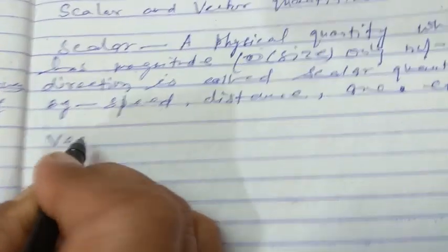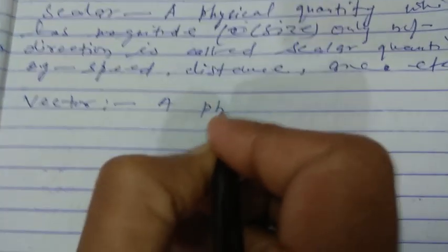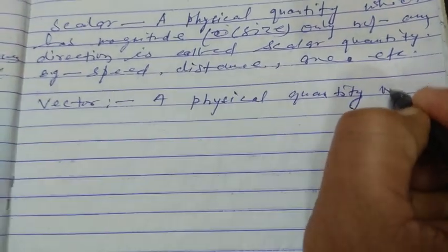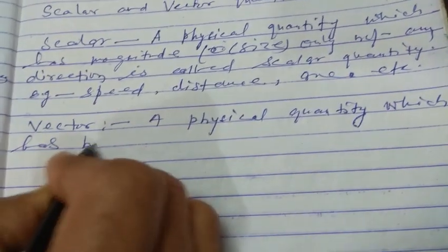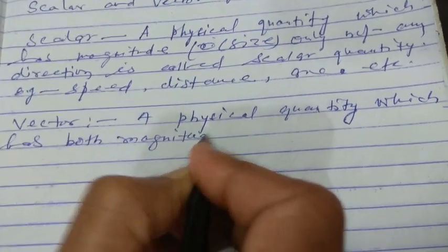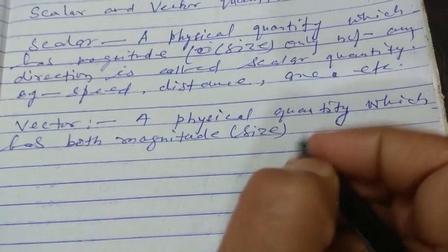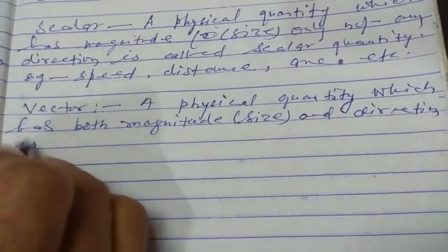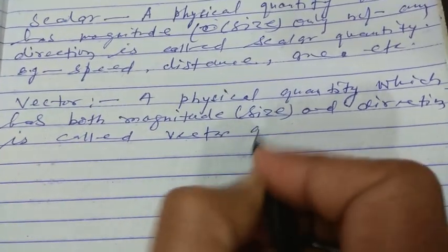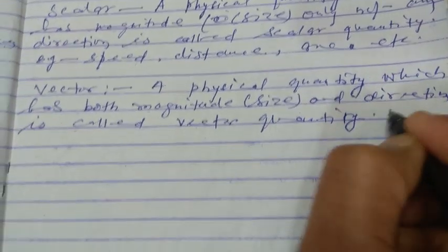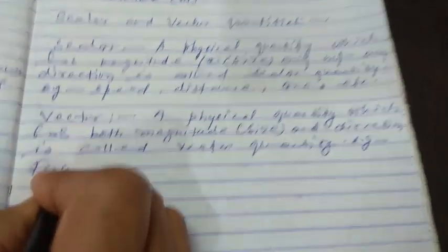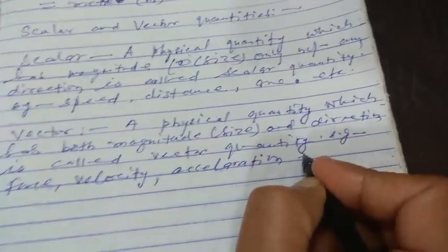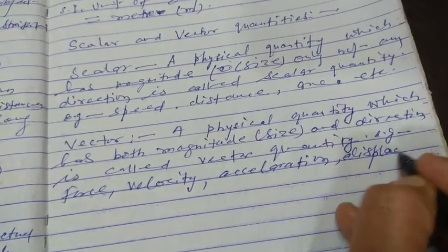A vector quantity is a physical quantity which has both magnitude and direction. For example, force, velocity, acceleration, displacement, etc.